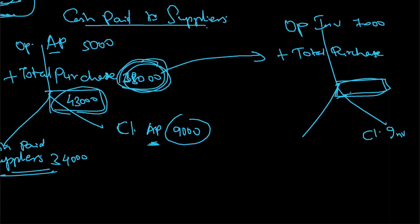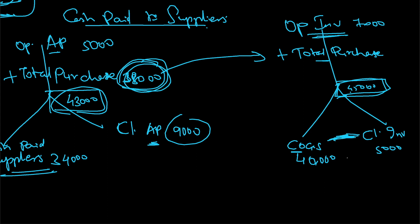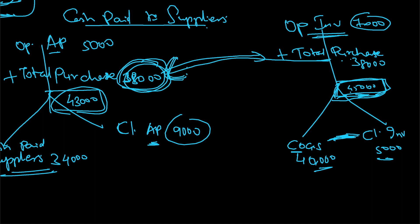Opening inventory and total purchase are categorized into closing inventory and cost of goods sold (COGS). Closing inventory is, say, 5,000. COGS from the income statement is 40,000. So the total is 45,000. Since opening inventory is 7,000, total purchase = 45,000 − 7,000 = 38,000. This 38,000 can then be used in the accounts payable calculation.